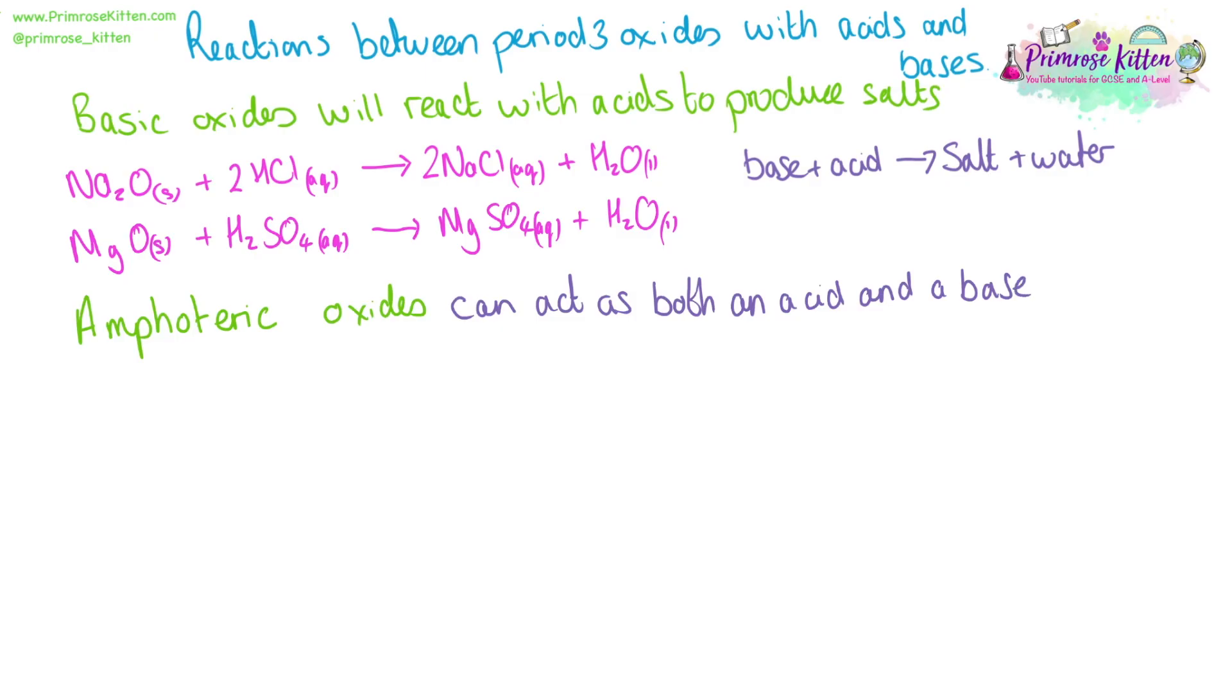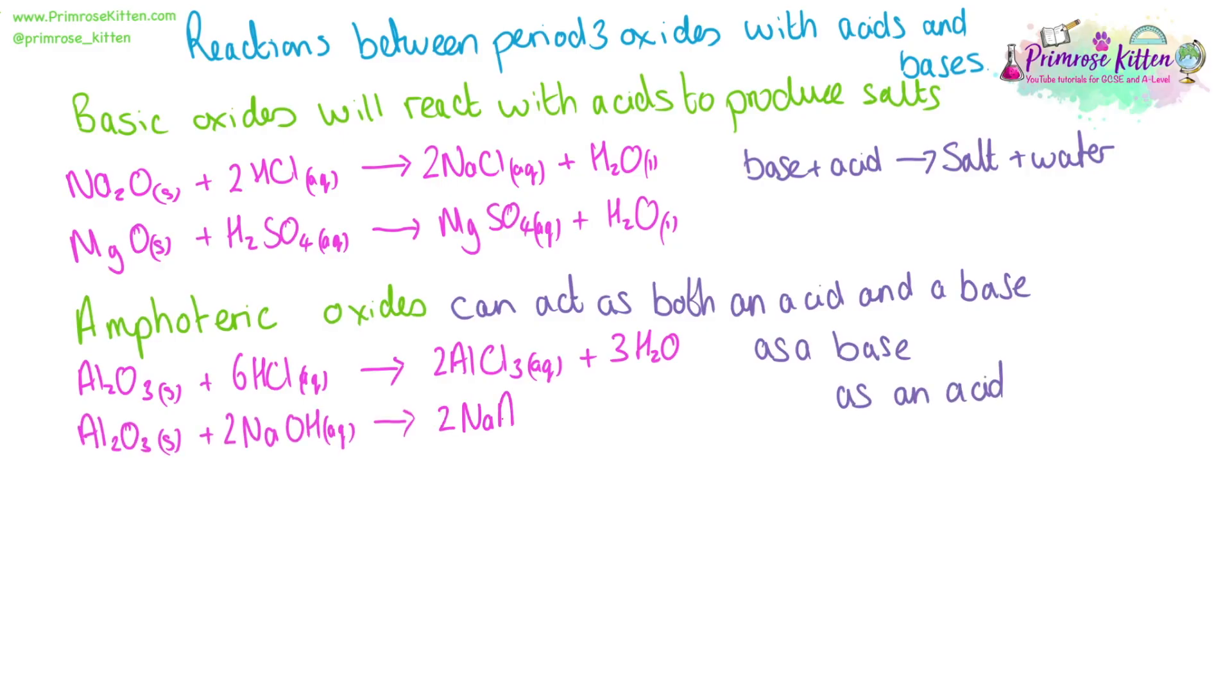Amphoteric oxides can act as both acids and bases. Aluminum oxide can react with hydrochloric acid and it is acting as a base to give us aluminum chloride and water. It can also act as an acid with aluminum oxide reacting with sodium hydroxide.